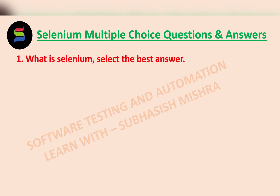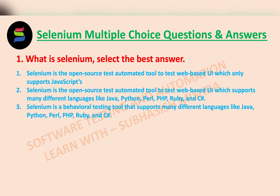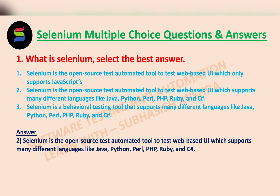The very first question is: what is Selenium? Select the best answer. We have three options — please read all these options carefully and try to answer first on your own. The correct answer is: Selenium is the open source test automation tool to test web-based UI, and it supports many different languages like Java, Python, Perl, PHP, Ruby, and C#.